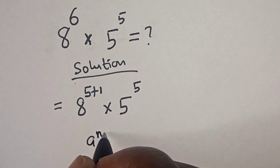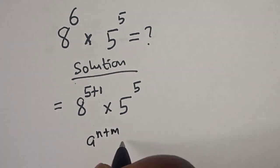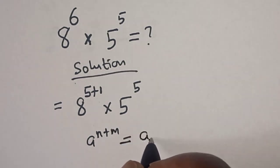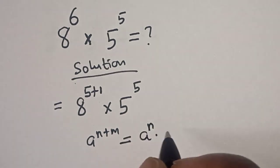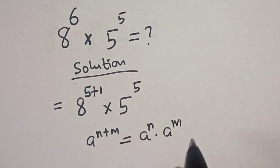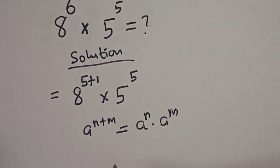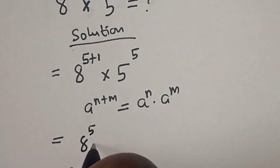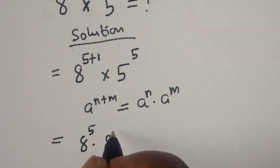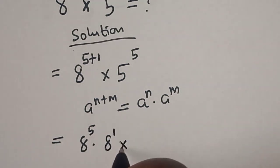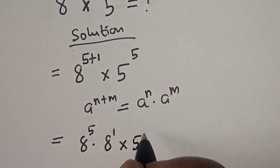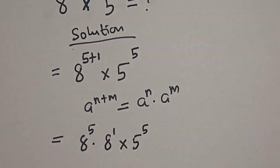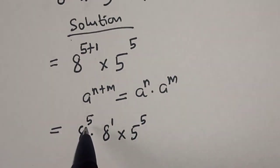Remember this rule: if you have a raised to power n plus m, this is equal to a to the power of n multiplied by a to the power of m. So this becomes 8 to the power of 5 multiplied by 8 raised to power 1, then multiplied by 5 to the power of 5.